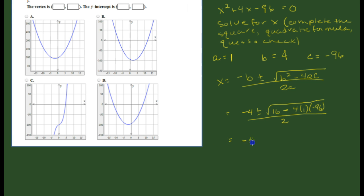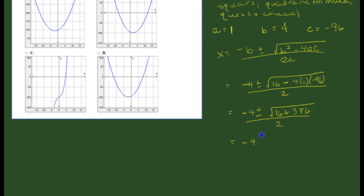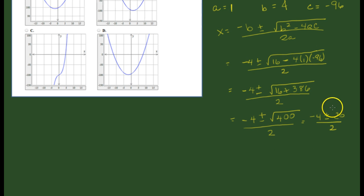Let's do the rest of the math under the radicand. We have 16, and then negative 4 times 1 is negative 4, and negative 4 times negative 96 is positive 384, all over 2. That equals negative 4 plus or minus the square root of 400, divided by 2. The square root of 400 is 20, so we have negative 4 plus or minus 20 divided by 2. Notice the plus or minus gives you two different values for x.